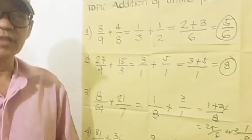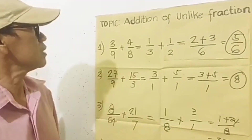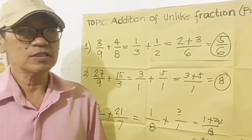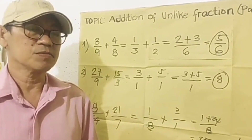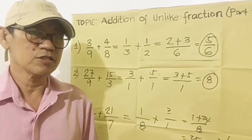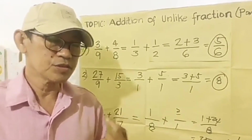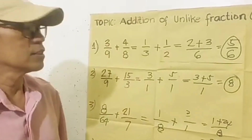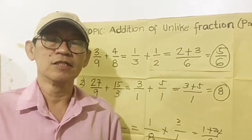I hope that you learned something from our topic today about the addition of unlike fractions using cross multiplication, to reduce the fractions first and then apply horizontal multiplication.